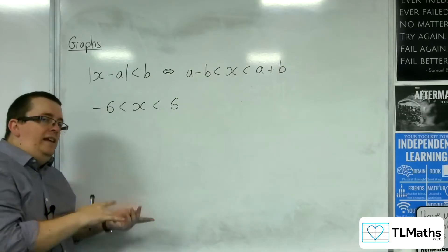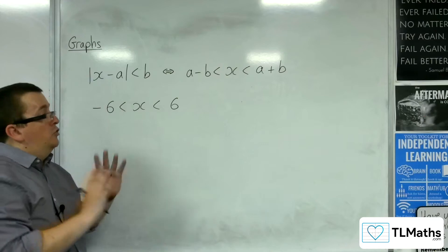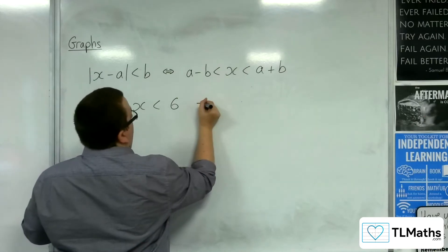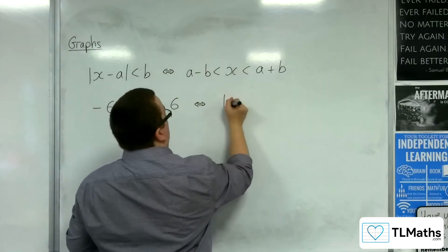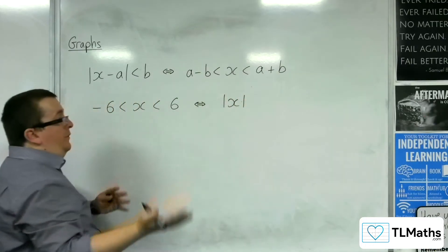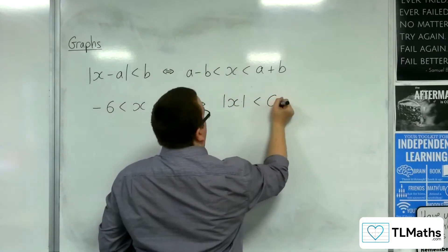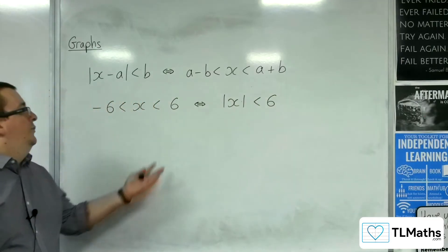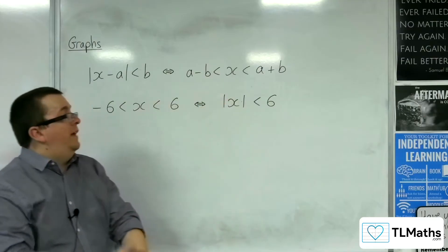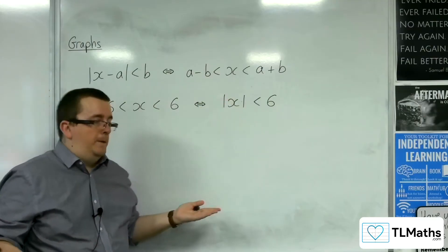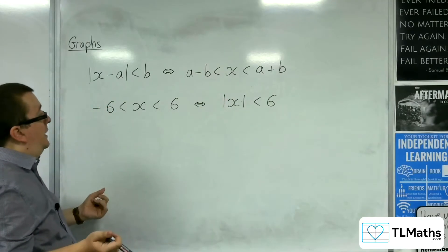Then the keen-eyed among you will probably be able to go straight on and say that would mean that x modded would be less than 6. That seems appropriate because we know that that has that solution, so going back that step makes sense. That mod x would be less than 6.